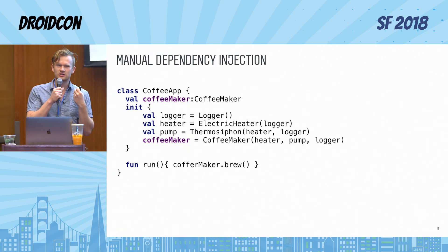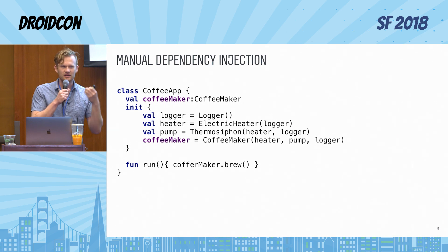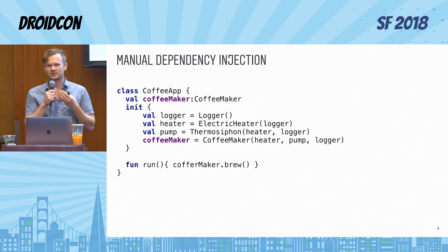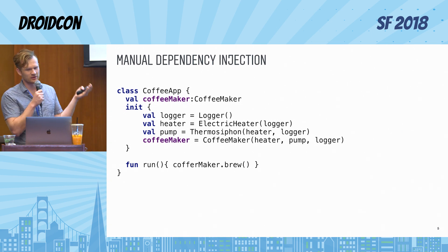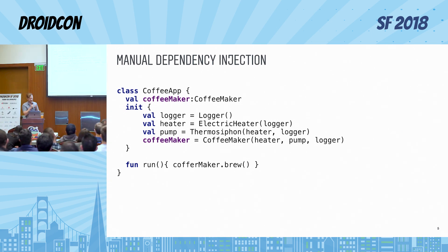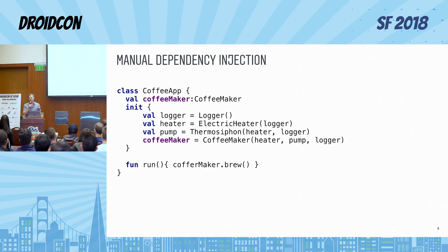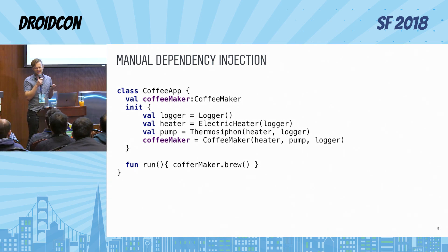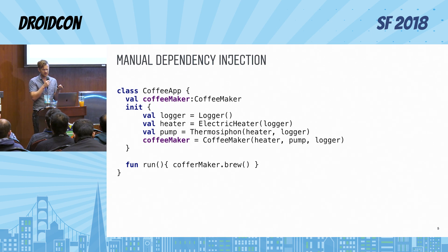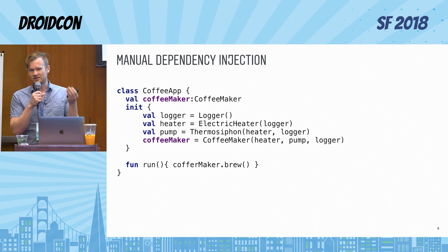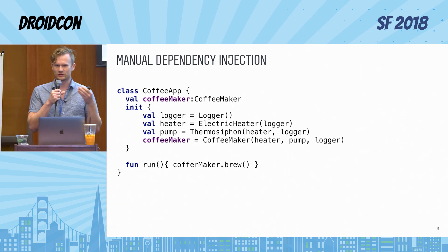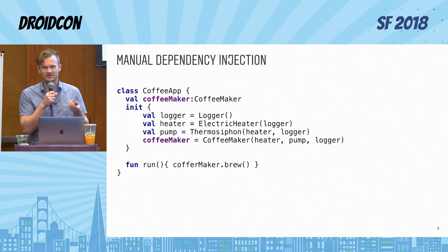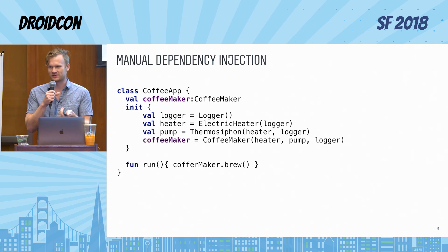As I mentioned before, dependency injection is a technique, which means you can implement it manually. In the case of our coffee maker it will look something like this. In this particular example it may not be that scary to do manual injection because our class hierarchy is pretty small. But in the real world the class hierarchy could be really gigantic, and creating those classes could be super problematic. That's why we have dependency injection libraries.